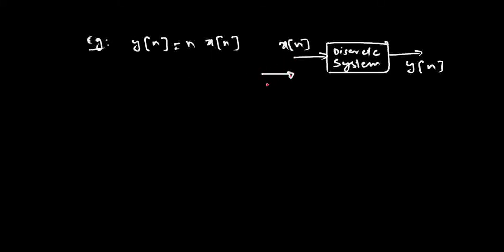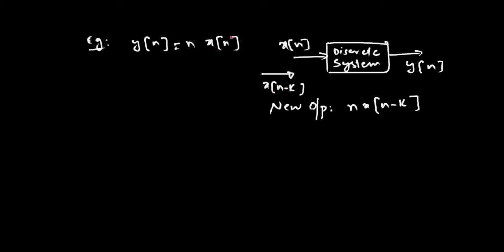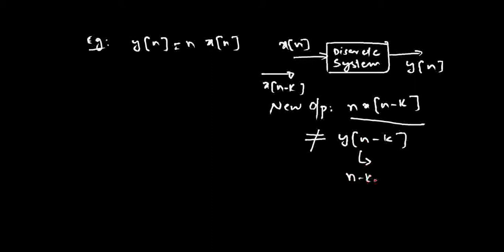If you delay the signal, the new input becomes x of n minus k. The new output you expect will be n into x of n minus k, because x of n becomes x of n minus k. Now, y of n minus k is actually n minus k into x of n minus k.